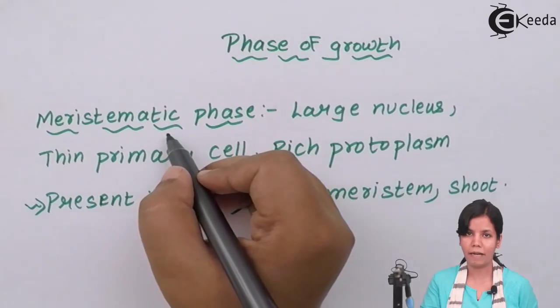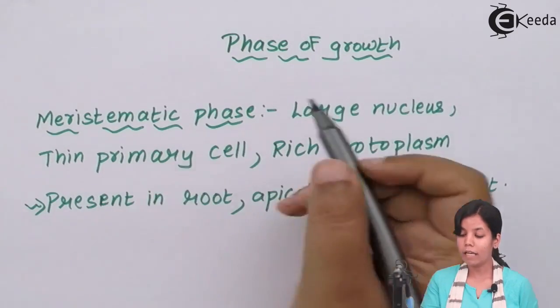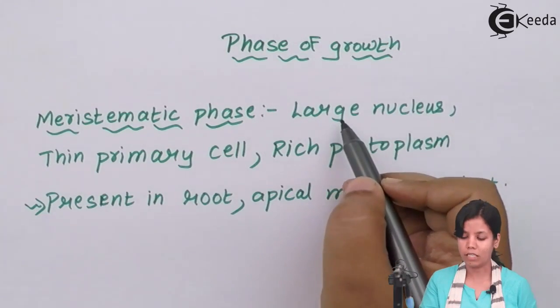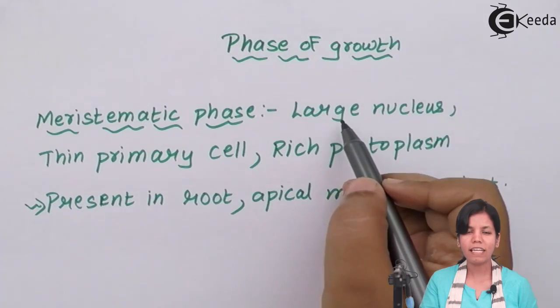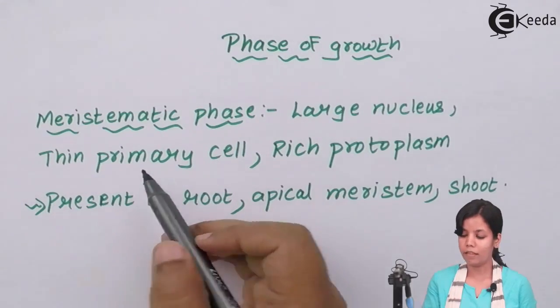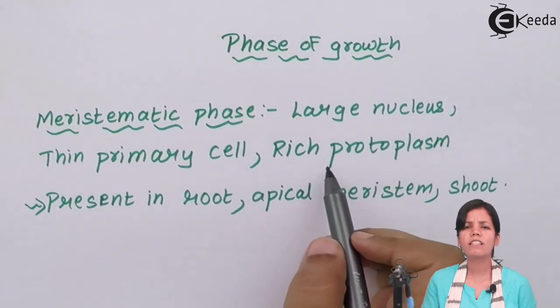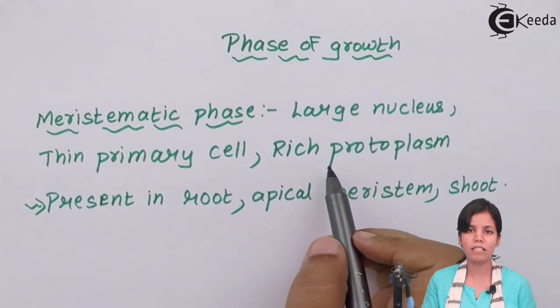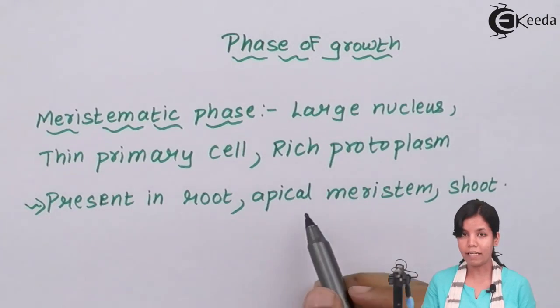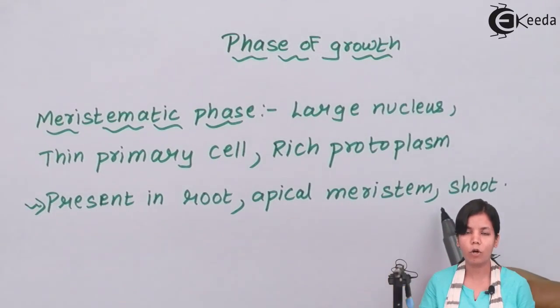The first phase, meristematic phase or phases of growth. Now in this phase, the cell has to divide. So what are the requirements in this phase? Large nucleus. When the nucleus is large, it is easy to give half and half nucleus to each daughter cell when the mother cell is divided. Thin primary cell wall. Obviously you are breaking the cell and if the cell wall is thin, it is easy to break. Rich in protoplasm or you can say cytoplasm, and if a cell has more cytoplasm, it is easy to divide. Meristematic phase is present in roots, apical region as well as the shoot region or the stem region.